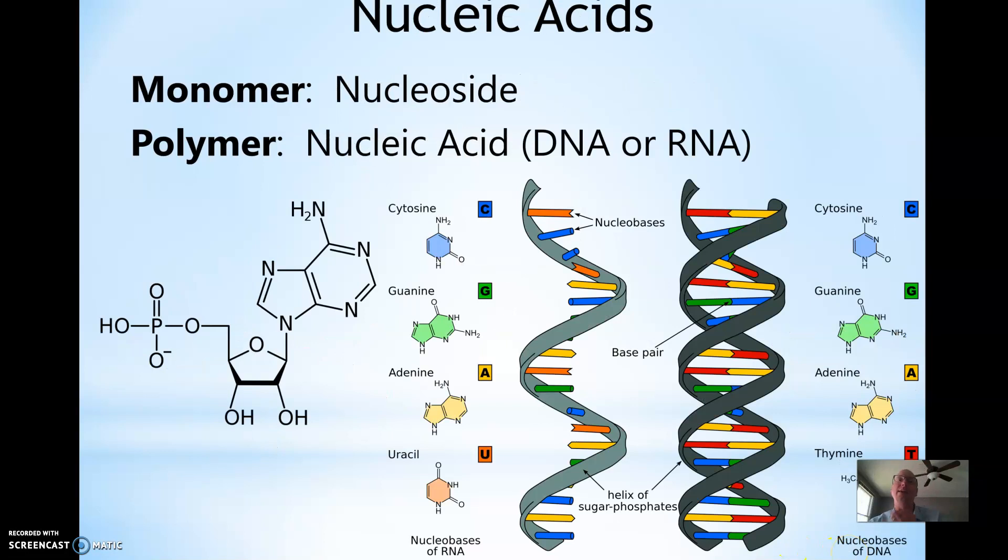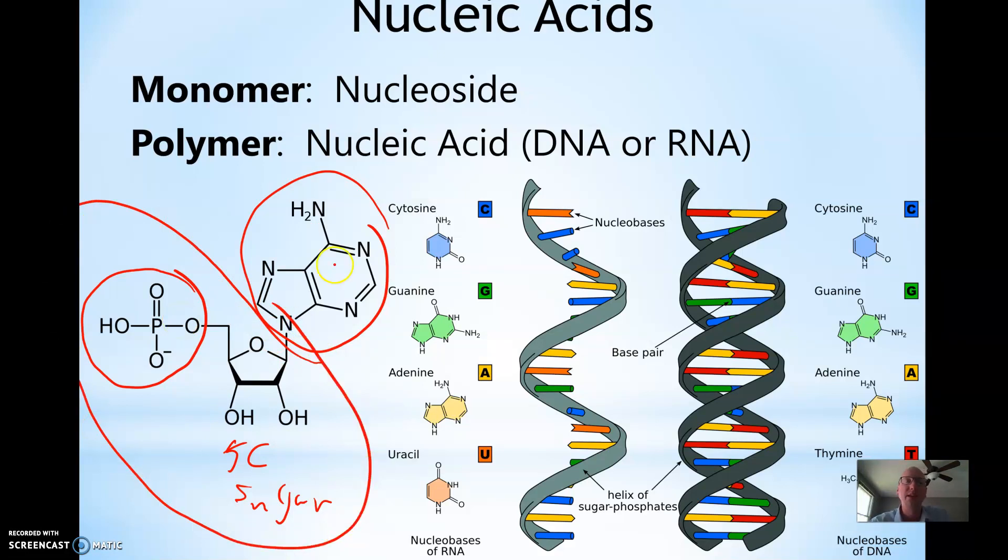Your nucleic acids - I would like you to know the monomers or the nucleotides. Nucleotides are made up of phosphate, a five-carbon sugar, and a nitrogen base. The sugar phosphate is what makes the backbone and the nitrogen base is what makes up the rungs of the ladder in DNA and RNA. You can see DNA is double-stranded, RNA single-stranded, and RNA has a uracil whereas DNA has a thymine - slight difference.